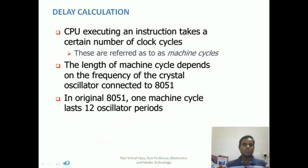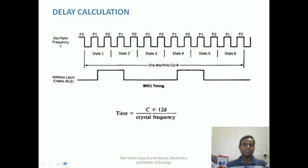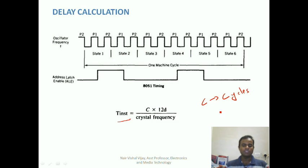Call instructions are mostly used to create delays. A delay is understood by first knowing how to find the timing of one instruction. The timing of an instruction is found by the formula: T = C × 12 / crystal frequency, where C is the number of machine cycles required to execute one instruction, 12 is a decimal constant, and crystal frequency is the oscillator frequency of the microcontroller — it can range from 1 MHz up to 18 to 20 MHz.